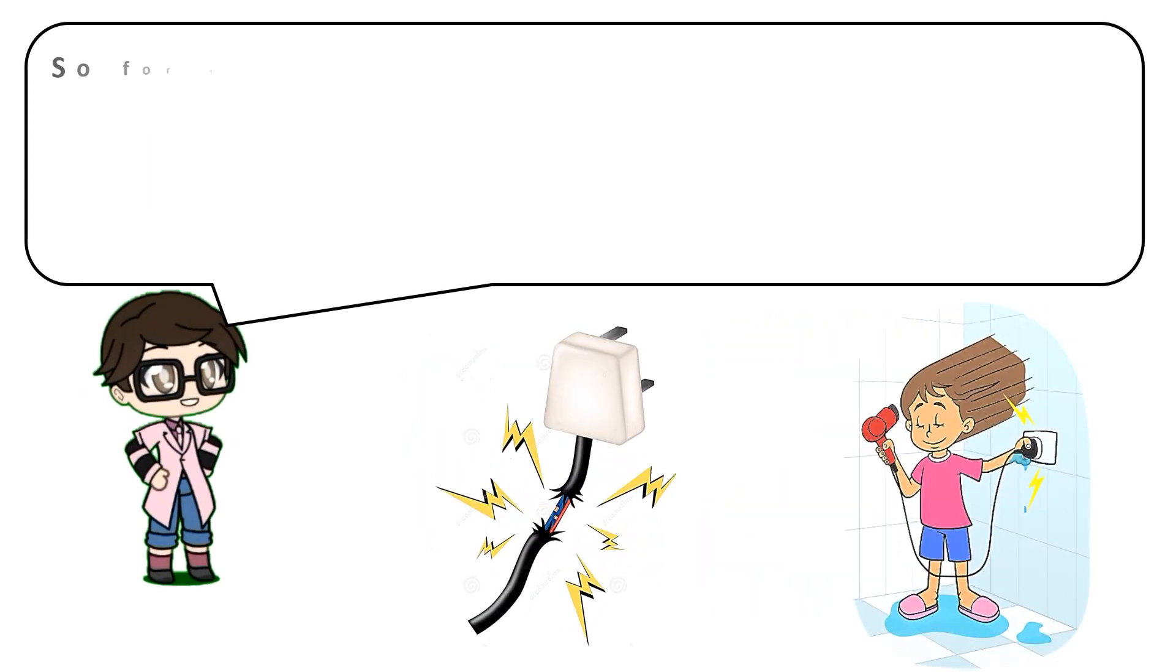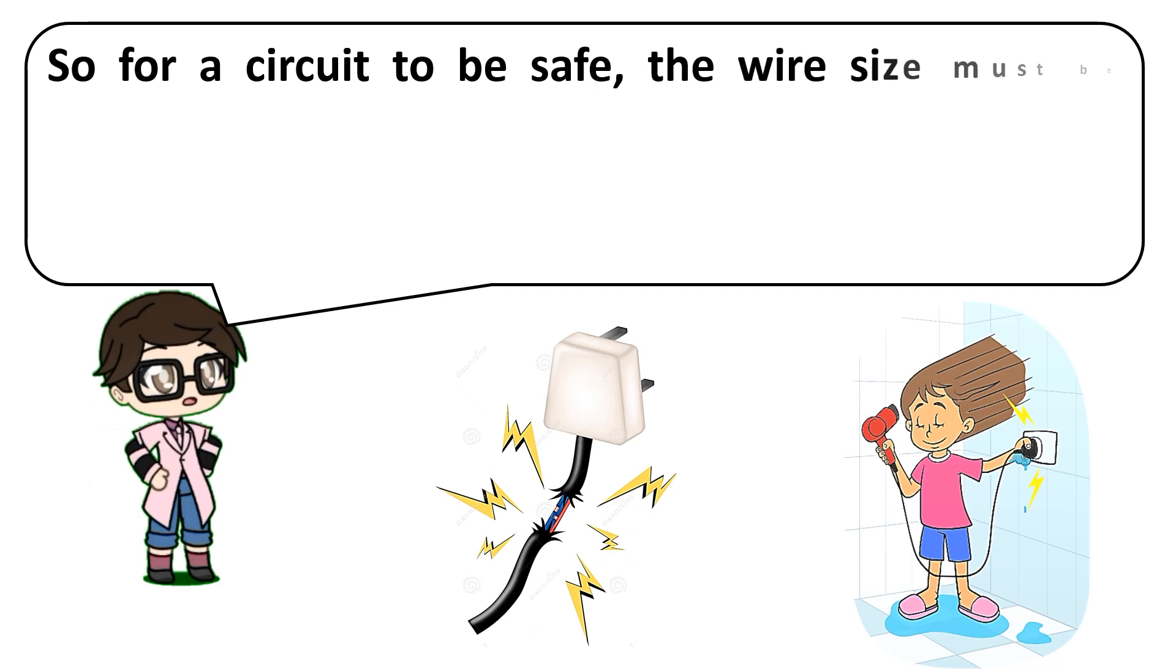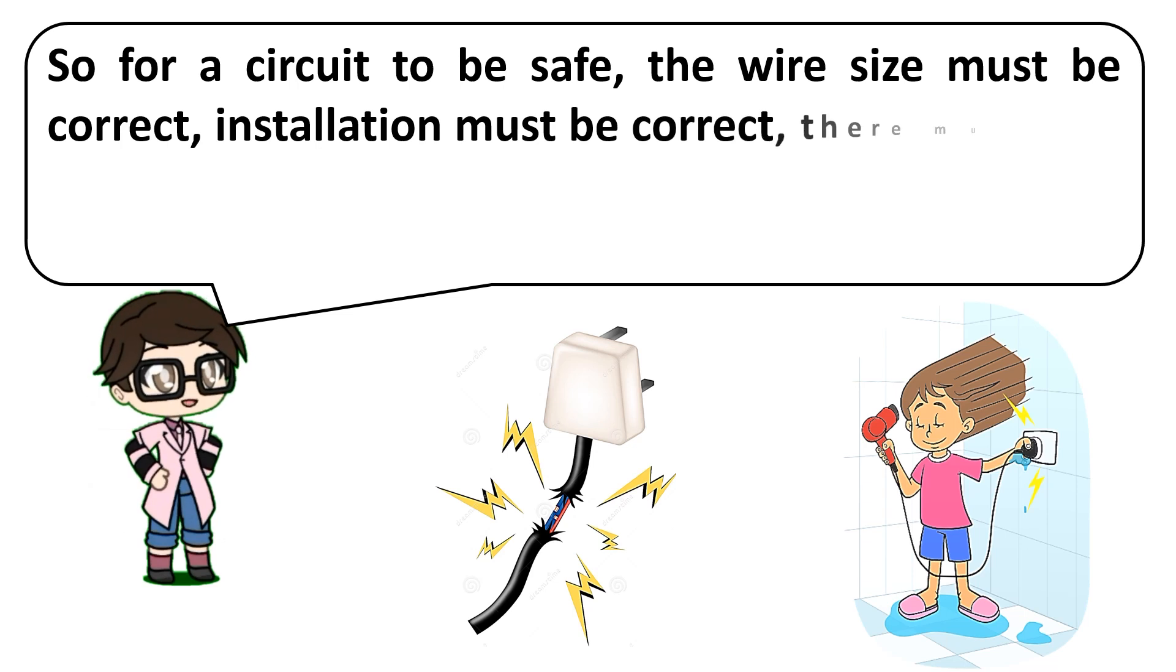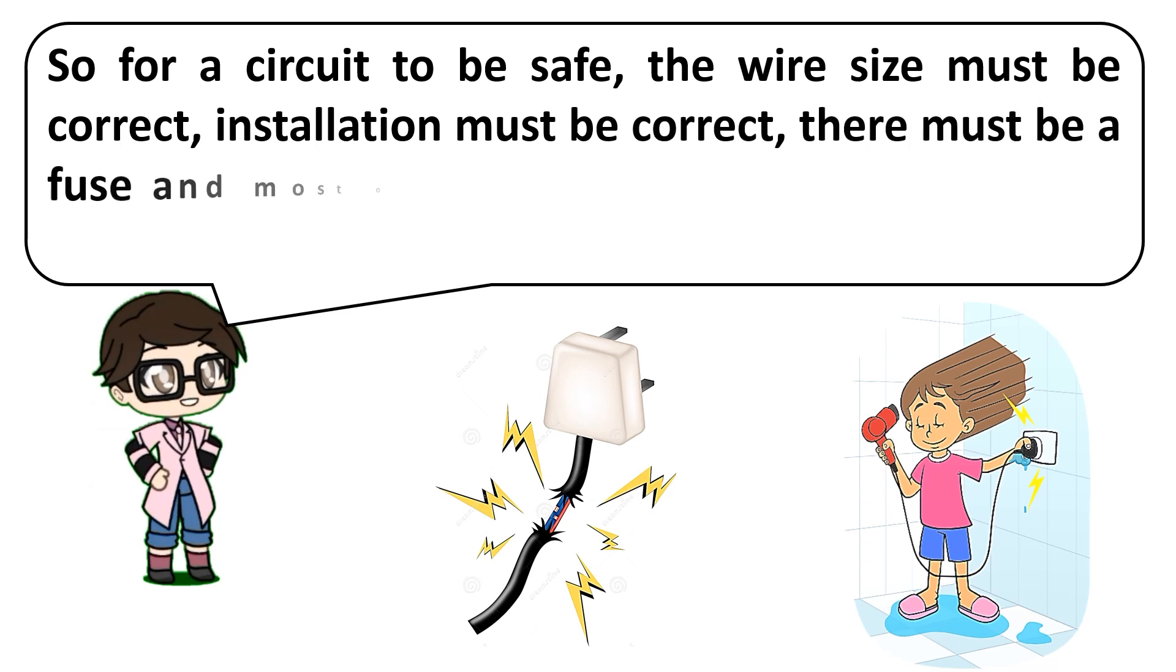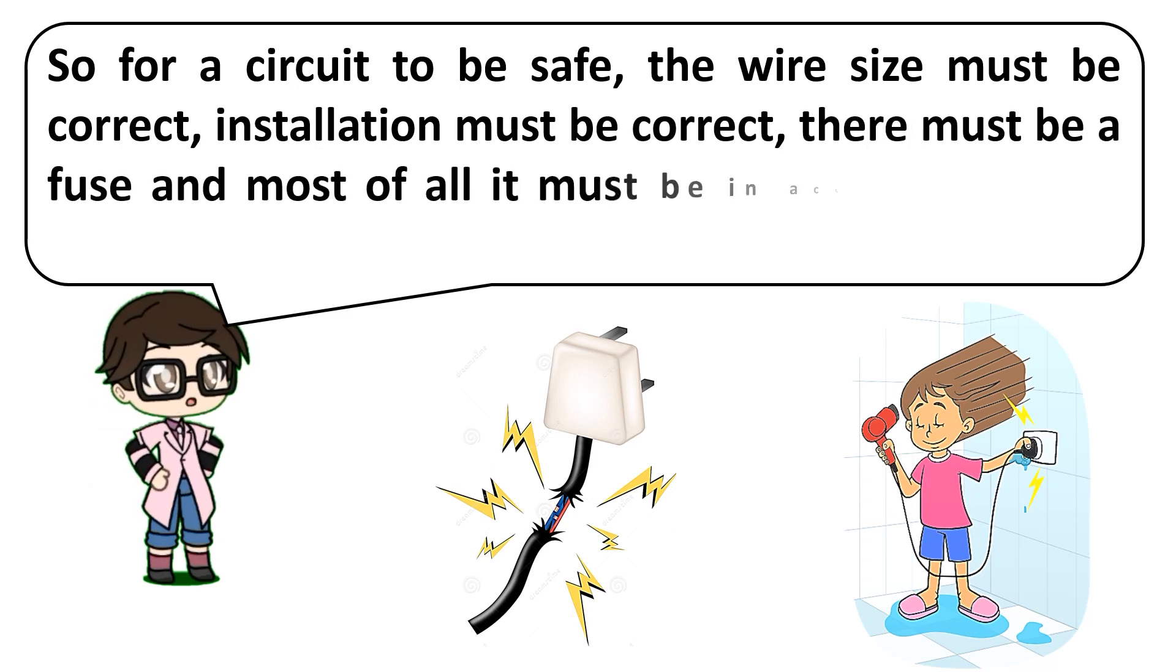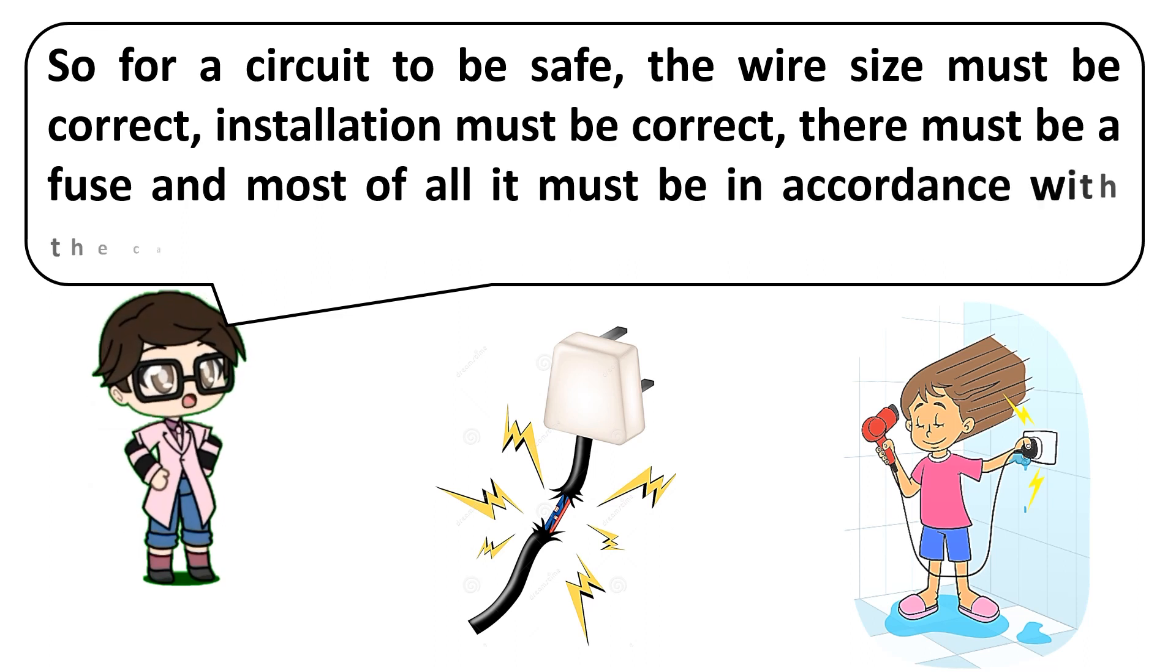So for a circuit to be safe, the wire size must be correct, installation must be correct, there must be a fuse, and most of all it must be in accordance with the calculation of Ohm's law.